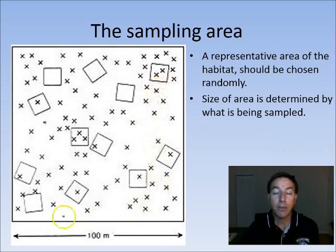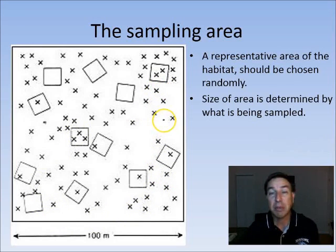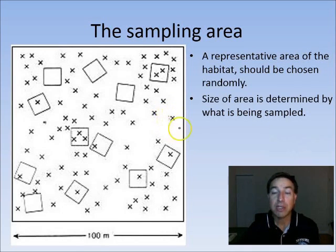Also, the area of what you're going to be sampling depends on what you're sampling. If you're sampling bacteria, obviously your area doesn't have to be that big. However, if you're sampling elephants, you're probably going to have to have a huge area. So your size of area that you want to sample depends on what you're sampling.